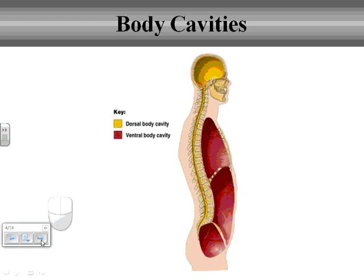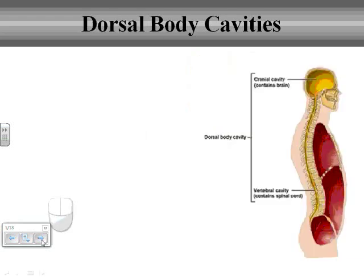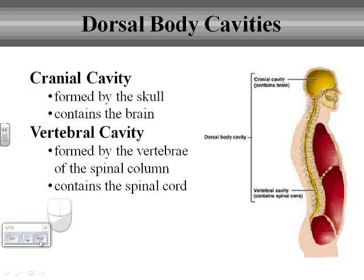As you can see in this drawing, the dorsal body cavity is on the back side of the human body while the ventral body cavity is on the front — those two words, dorsal and ventral, are used exactly for back and front. We can then divide the dorsal body cavity into the cranial cavity and the vertebral cavity. Cranial refers to the head — that's going to be the skull where the brain sits. The vertebral cavity is where the spinal cord sits, contained by vertebrae.